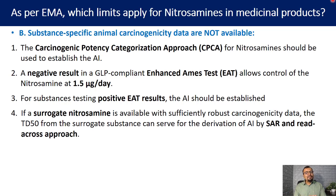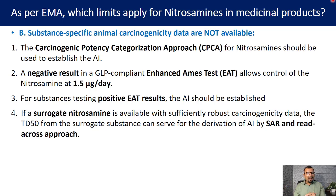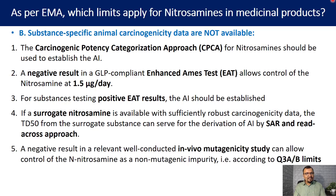If a surrogate nitrosamine is available with sufficiently robust carcinogenicity data, the TD50 from the surrogate substance can serve for derivation of the acceptable intake by SAR and read-across approach. This approach has also been used by regulators for defining acceptable intake. Additionally, a negative result in a relevant well-conducted in vivo mutagenicity study can allow control of the nitrosamine as a non-mutagenic impurity, following ICH guideline Q3A or Q3B.